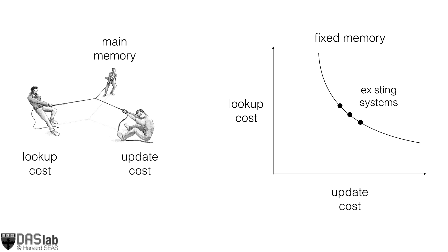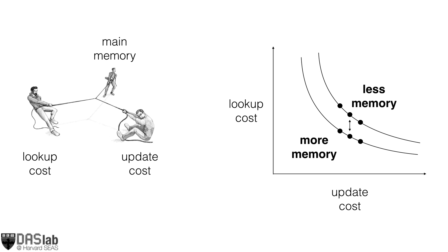To visualize the relationship, we can plot a projection of the trade-off space. That is, for a fixed amount of main memory, existing systems fall along a trade-off curve between lookup cost and update cost. We can move along this curve by merging more or less greedily, and we can also shift this curve up and down by changing the amount of main memory allocated to the system.